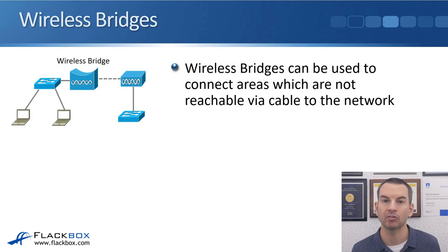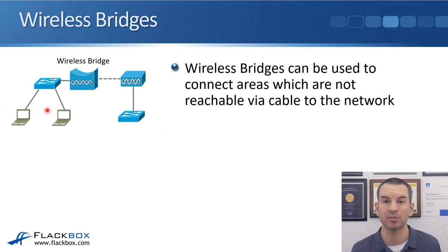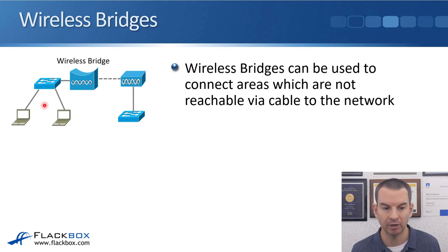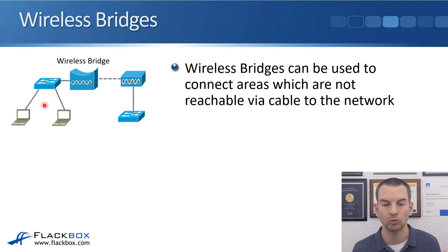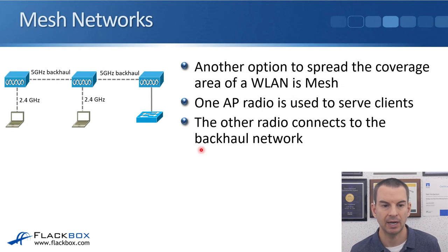Another couple of things to cover: wireless bridges is the first one. Wireless bridges can be used to connect areas which are not reachable via cable to the network. For example, if you have a warehouse where it's not possible to get a wired connection from the main building, you could put a wireless bridge in there and have a wireless connection going over to the main building. Wireless bridges are often used to give connectivity between buildings where a cable is not possible.